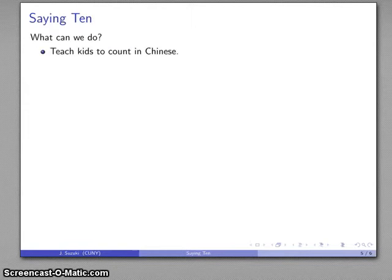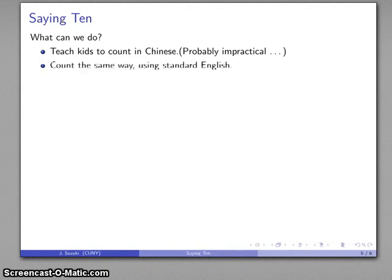Well, what can we do about this? Well, one thing we might do is we might teach kids to count in Chinese. Probably a valuable skill. Certainly, learning another language is always useful. But in this case, it's probably impractical to do so. The other thing we can do is to try to count the same way, but this time using standard English. And this leads to what's called the saying ten method of counting.